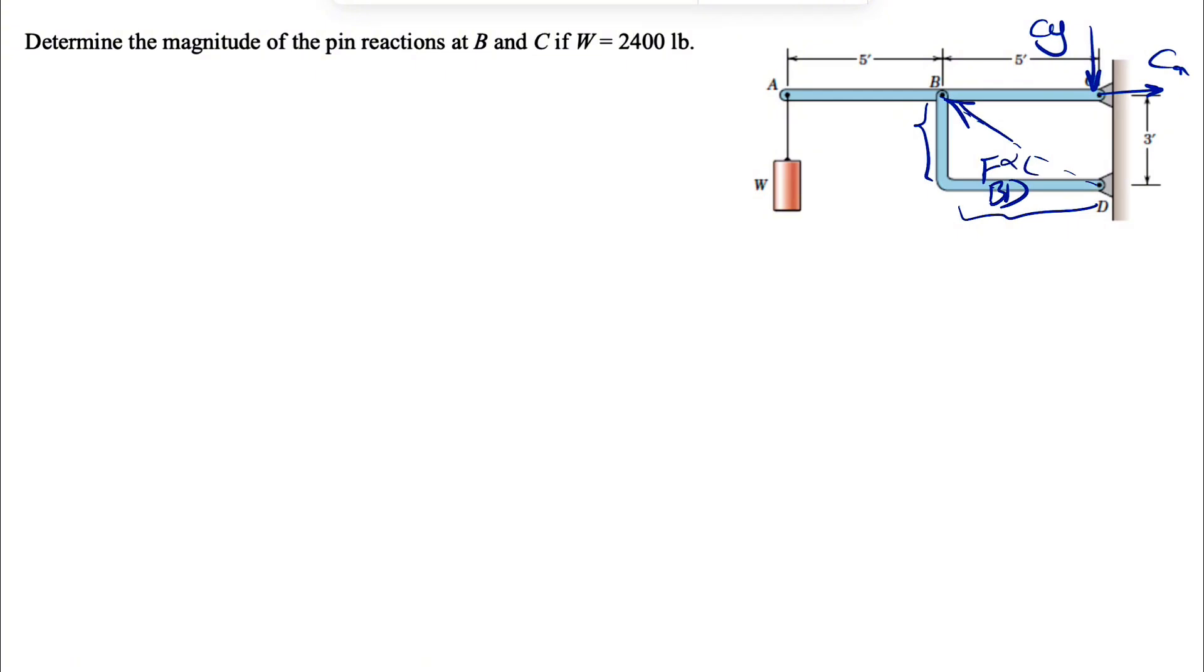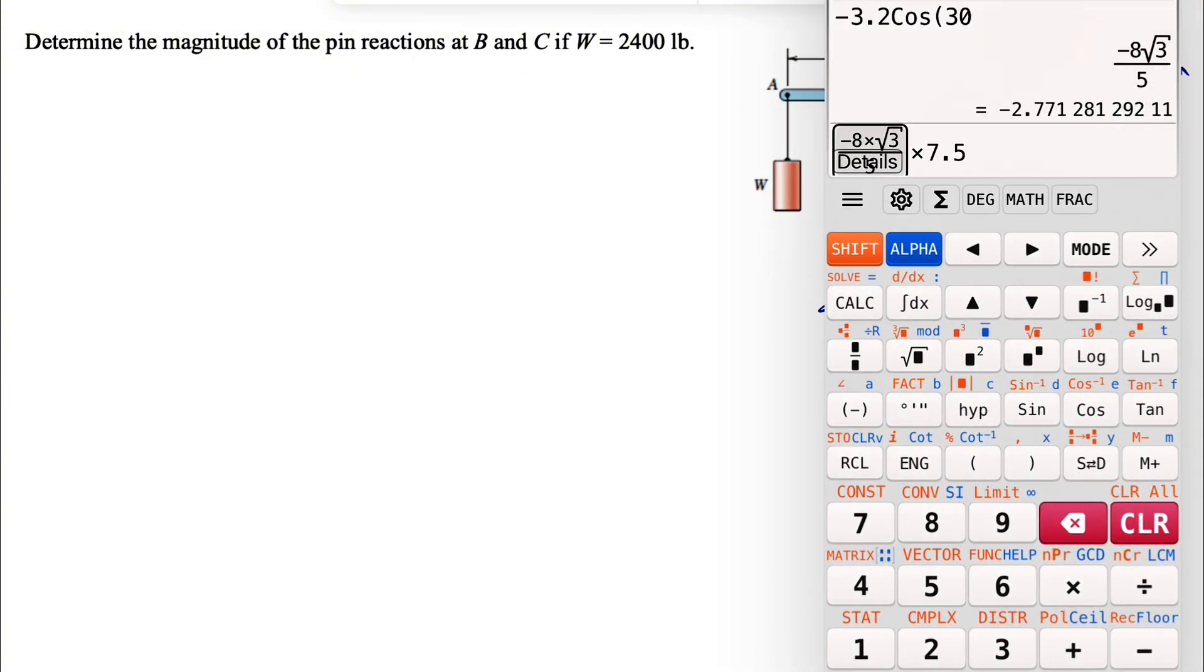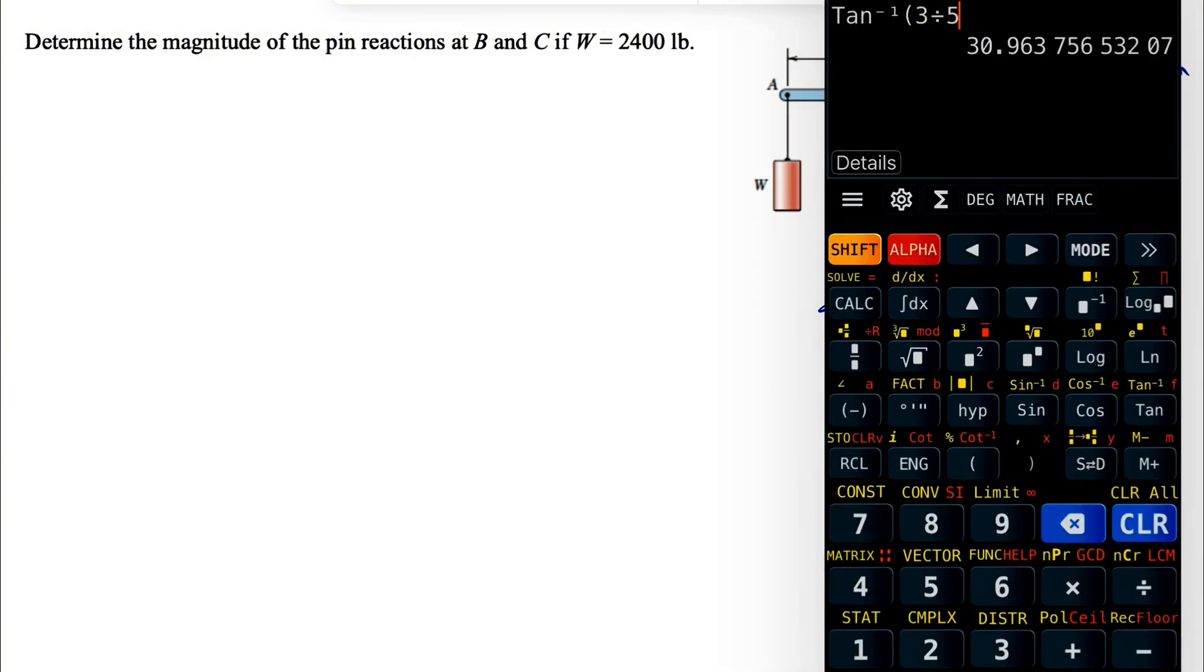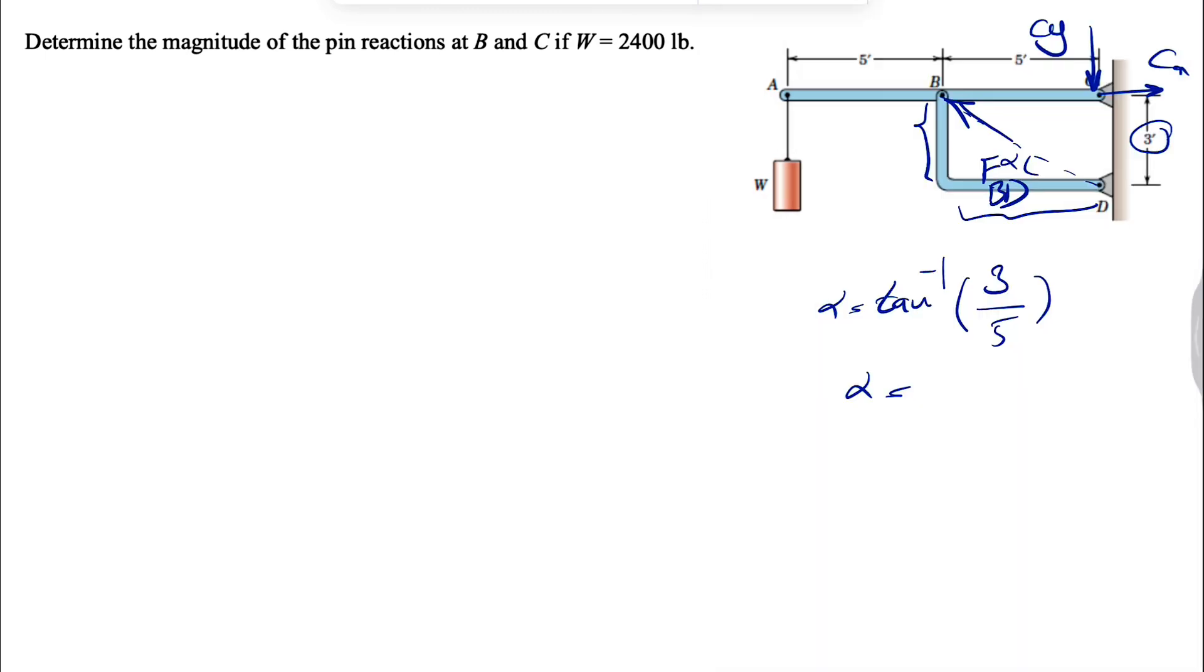And if we want to find that angle here, let's call it maybe alpha. We know that alpha would be tangent inverse of the opposite, which is this side, three over five. And we can find alpha in here. So tangent inverse of three divided by five. This is going to be 30.96 degrees.